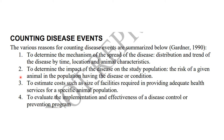Number two, to determine the impact of the disease on the study population — so the risk of a given animal in the population of having the disease. This is related to the W-questions posted in the first slide. Number three, to estimate costs such as the size of facilities required for providing adequate health services for a specific animal.